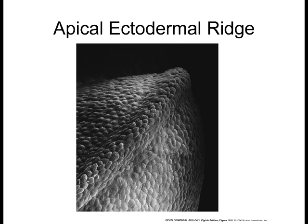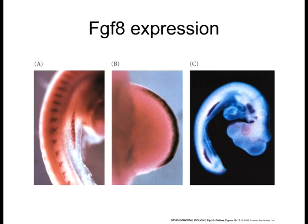That's how critical the apical ectodermal ridge is. This is key to limb development, specialization of cells or differentiation of cells, as well as maintaining mitosis that's necessary for outgrowth. This is also where FGF-8 expression is maintained. The apical ectodermal ridge is essentially the ectoderm.